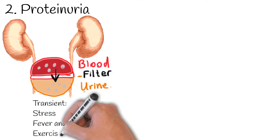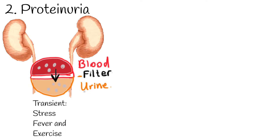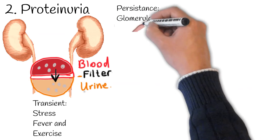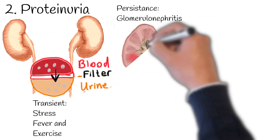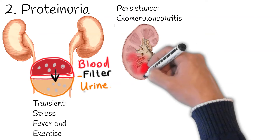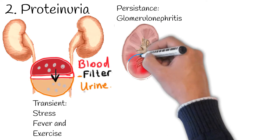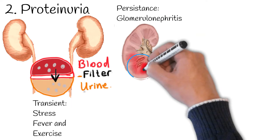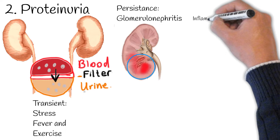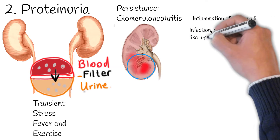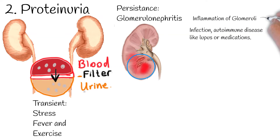But persistent proteinuria indicates kidney damage. The most common cause is glomerulonephritis, an inflammation of the kidneys' filtering units called glomeruli. It can happen because of infection, autoimmune disease like lupus, or medications.